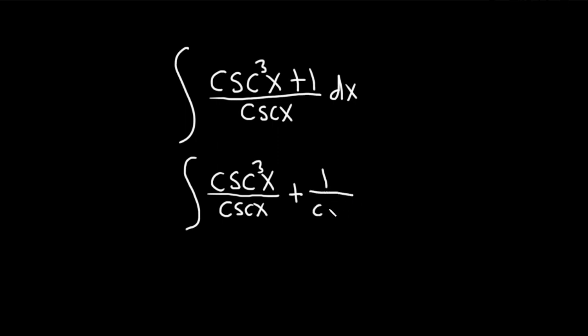So 1 over cosecant x, we have our parentheses, and then we have the dx.